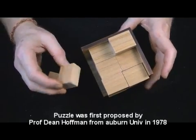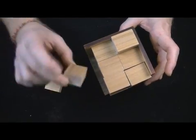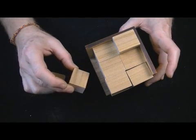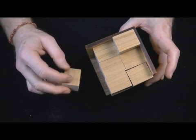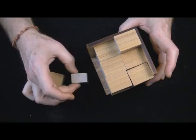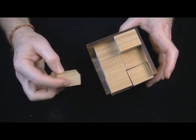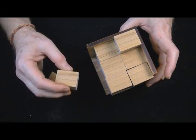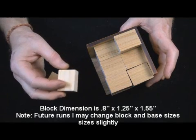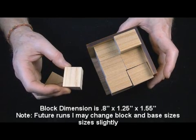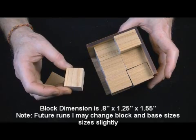In the case of n equals 3, you can take 27 of these identical blocks. In this case, each block has a thickness of 0.8 inches, a width of 1.25, and a length of 1.55. The sum of those three numbers equals 3.6 inches.